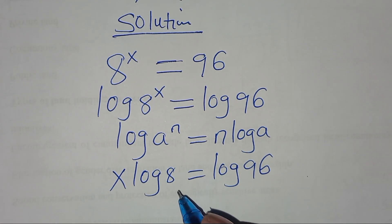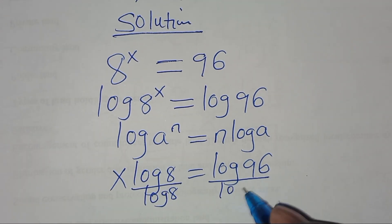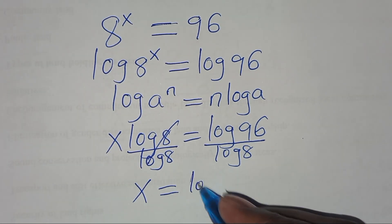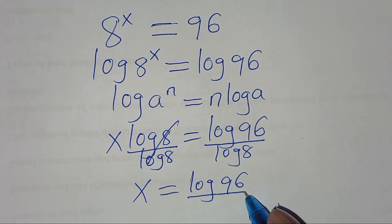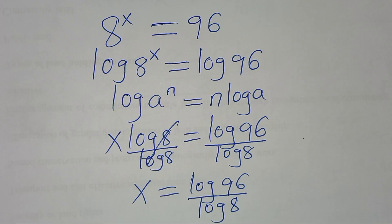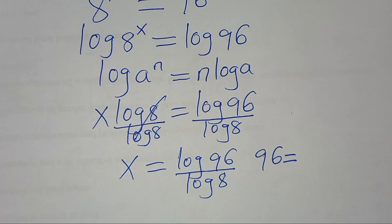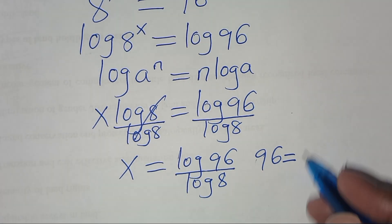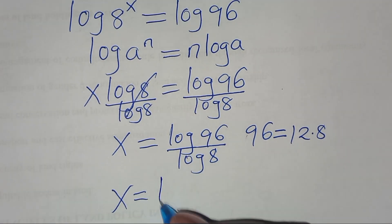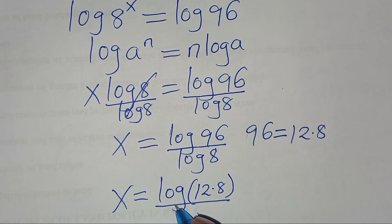The next step: divide both sides by log(8), so that we have x equals log(96) divided by log(8). Now we can express 96 as 12 times 8, so x equals log(12 × 8) divided by log(8).